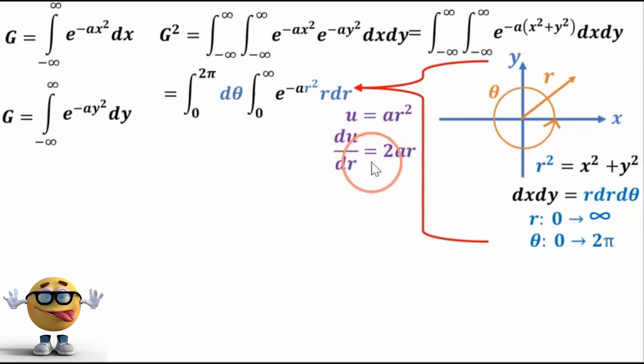Take the derivative. So du dr equals 2 ar. And from here, we can substitute what this is into here. And if we do that, we get our d theta here. Nothing changed.